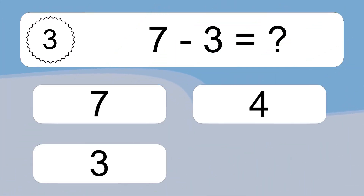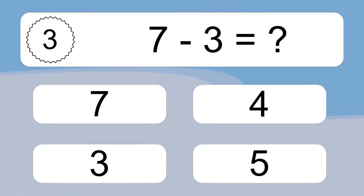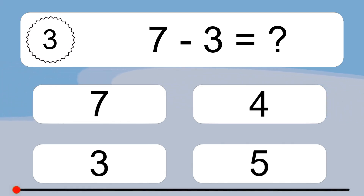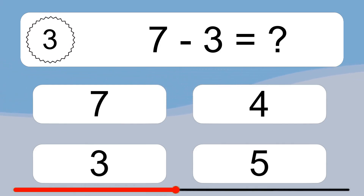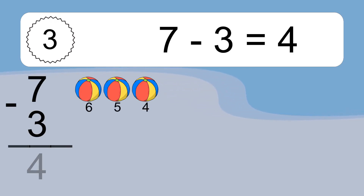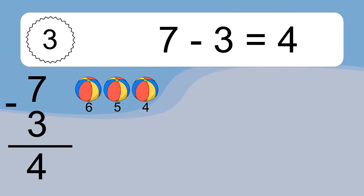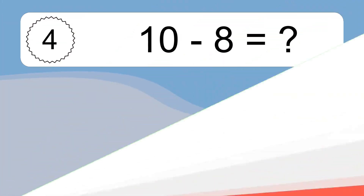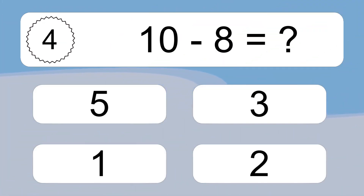7 minus 3 equals what? 7 minus 3 equals 4. Let's count it: 6, 5, 4. 10 minus 8 equals what?